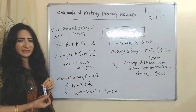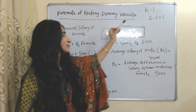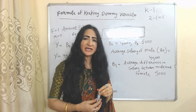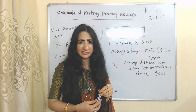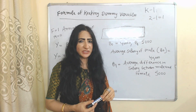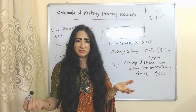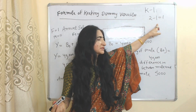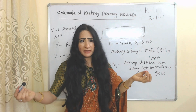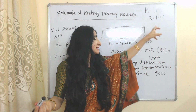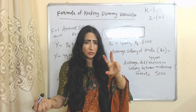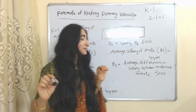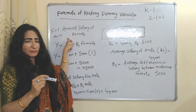Now we'll see an example and the formula for keeping dummy variables: K minus one. This is the formula for keeping dummy variables — K represents the number of categories. For example, in the case of gender we have only two categories, male and female, so the value of K is equal to two. Two minus one equals one, so we will keep one variable as a dummy. If we have three categories, three minus one equals two, and we will keep two variables as dummies.